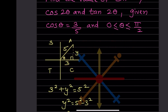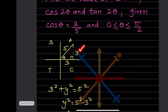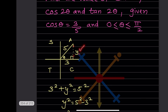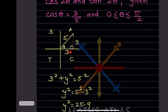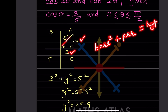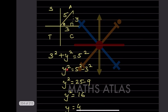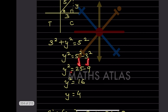Let the opposite side be y. Using the Pythagorean theorem: base² + perpendicular² = hypotenuse², so 3² + y² = 5². Therefore y² = 25 - 9 = 16, giving y = 4.